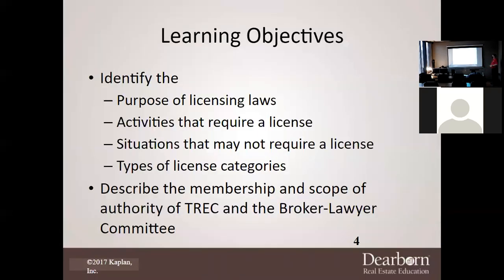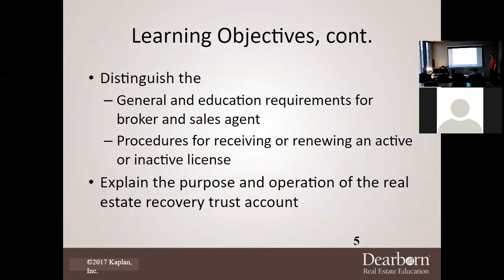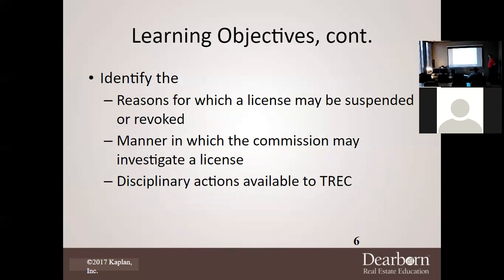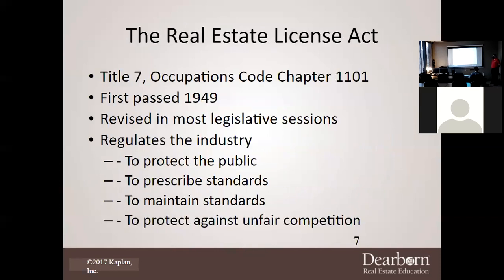The learning objectives: we are going to identify the purpose of licensing laws, the activities that are required for a license, the situations that may not require a license, and the types of license categories. We'll describe the membership and scope of authority of TREC and the Broker-Lawyer Committee. We'll distinguish the general and education requirements for broker and sales agent. We'll discuss the procedures for receiving or renewing an active or inactive license. We'll explain the purpose of the Real Estate Recovery Trust Fund. We'll identify reasons for license suspension or revocation, the manner in which TREC may investigate a licensee, and disciplinary actions available to TREC.